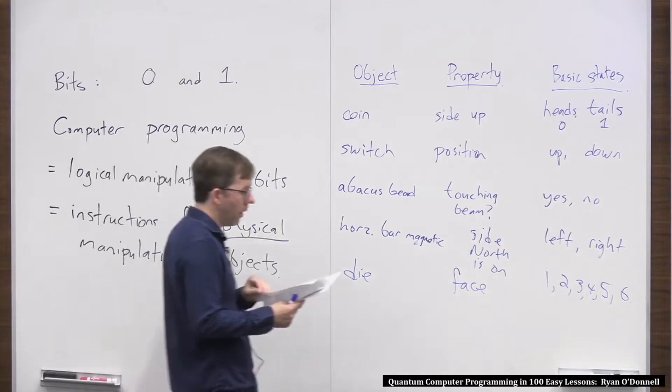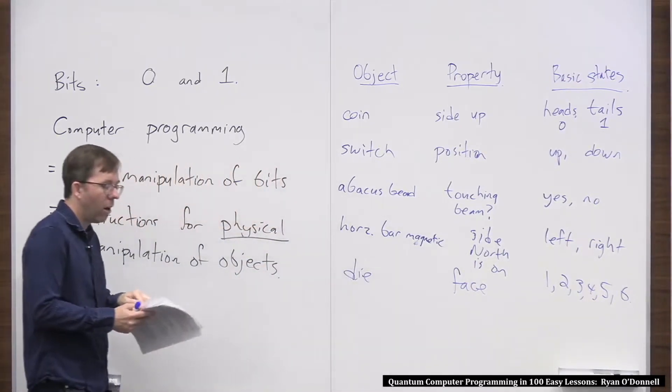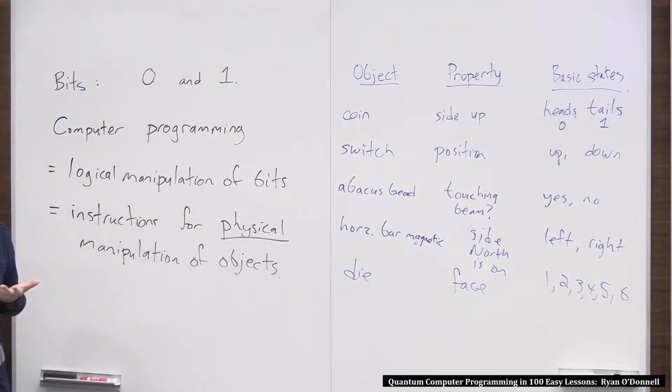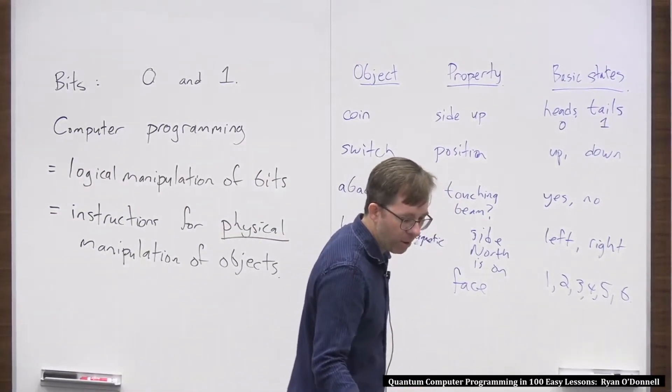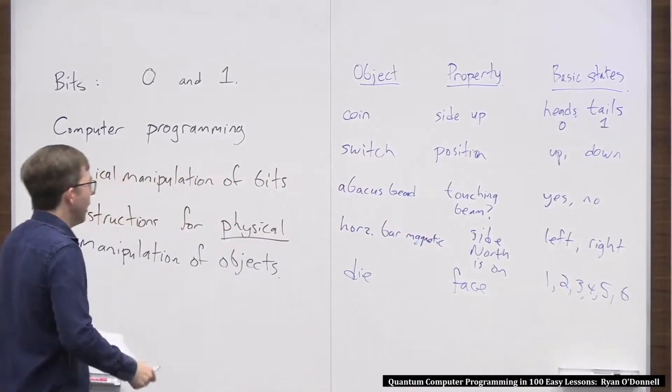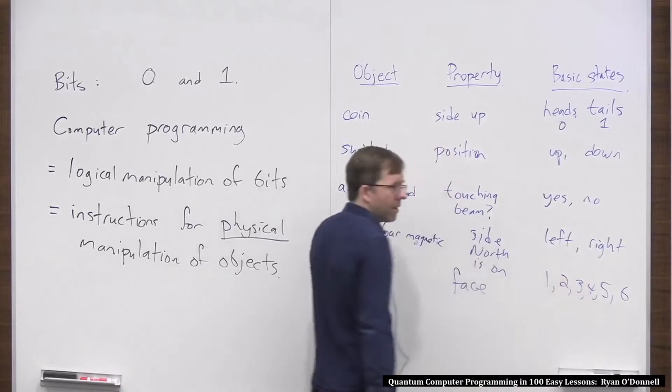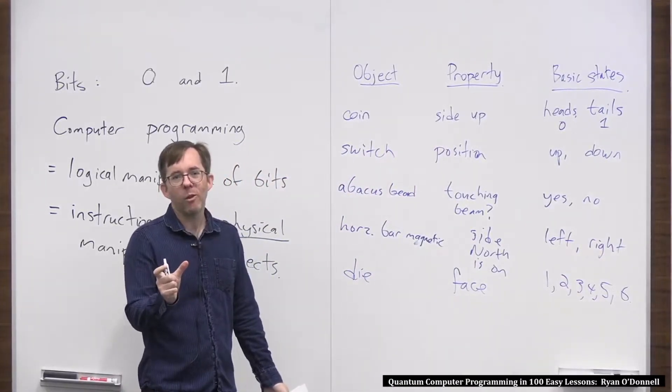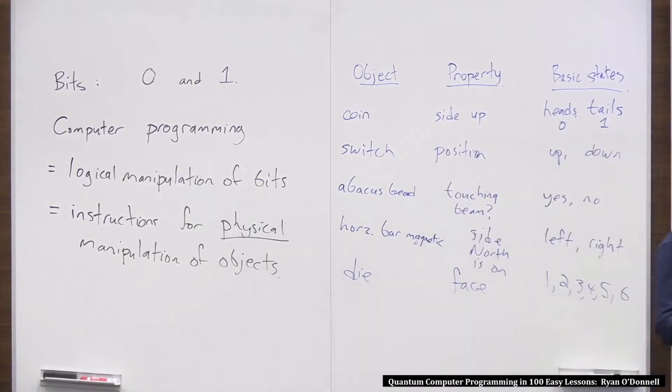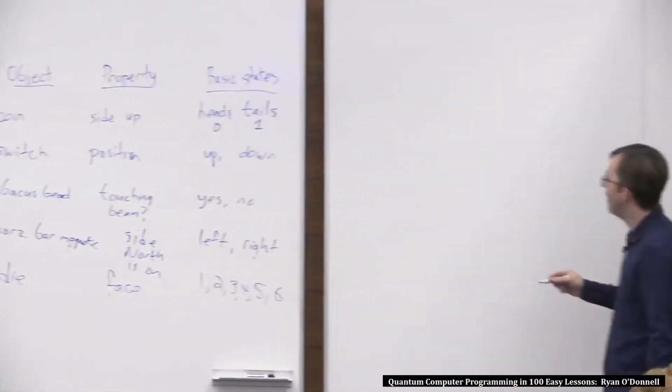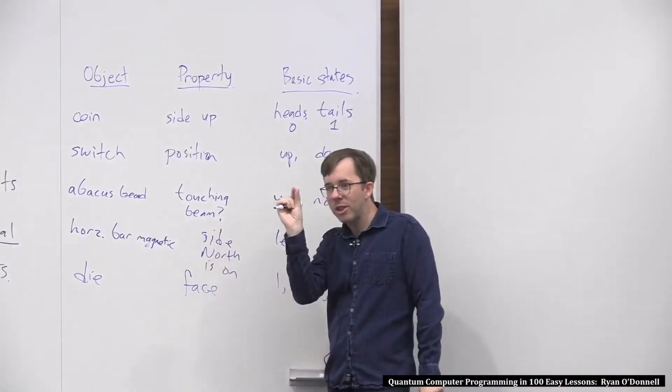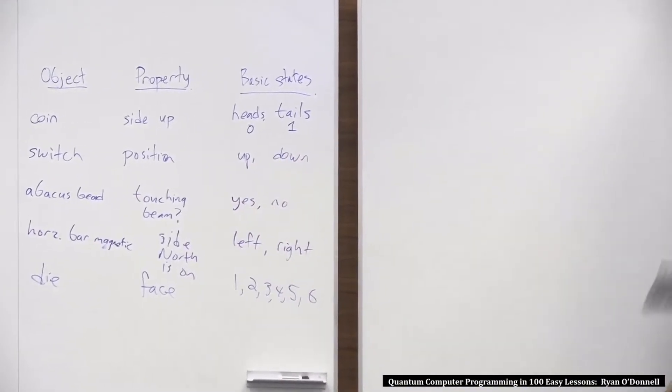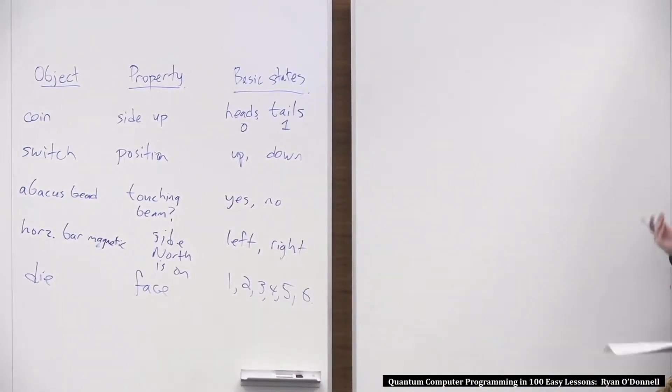Okay. Now, these are all examples. I picked examples of objects that have a property that have two basic states. And you can also have things that have more than two basic states. So kind of similar to the coin, if you have a regular D6, a die, you know, it's the face that's showing up. And this can be one, two, three, four, five, or six. Okay. So the first four examples I just made up here all of the properties that they have two distinguishable basic states. And whenever you have this, you can just call one of them zero and call one of them one and be like, great. Now, you can use this to represent a logical bit.